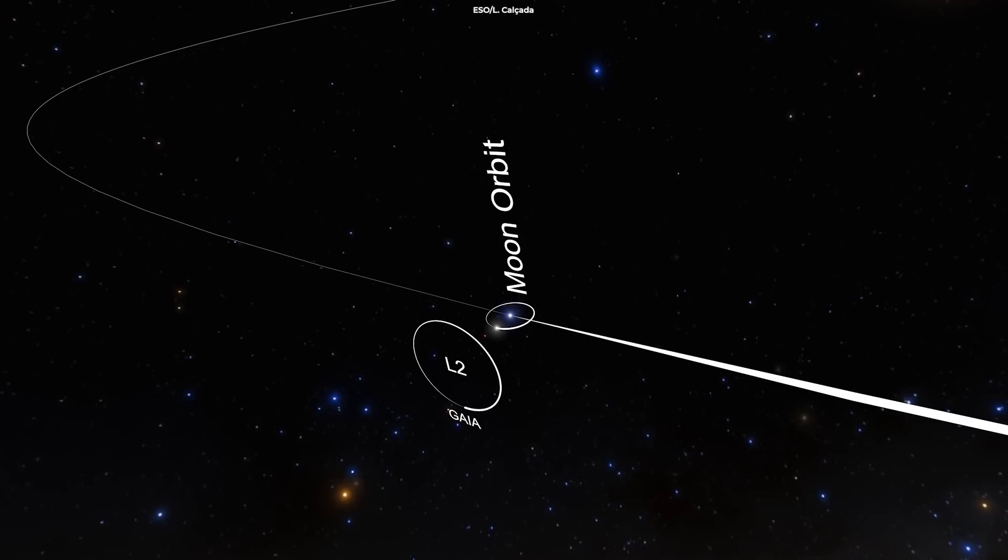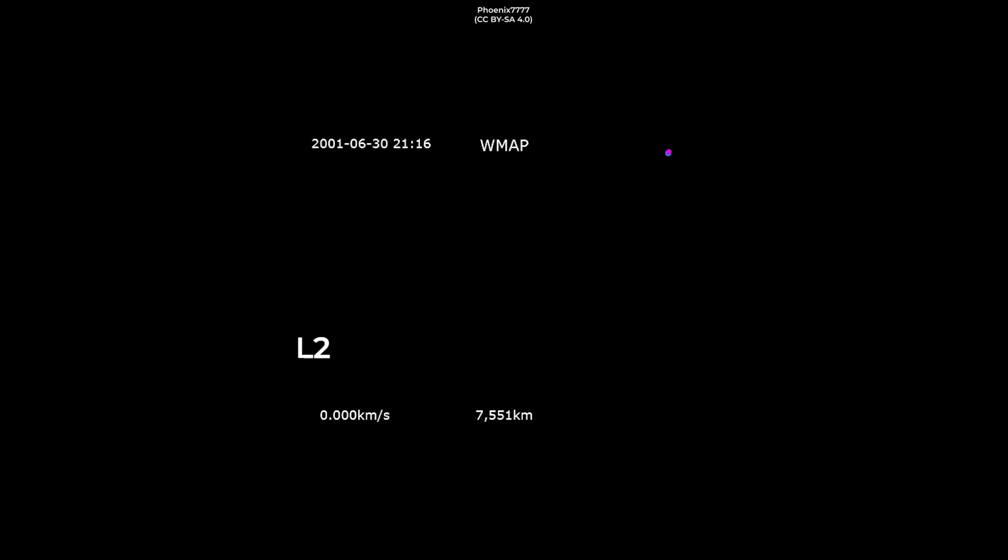L2 is also a million miles from Earth, but in the opposite direction of the Sun. A spacecraft can have a clear view of outer space at this point, with the Earth, Moon, and Sun behind it.